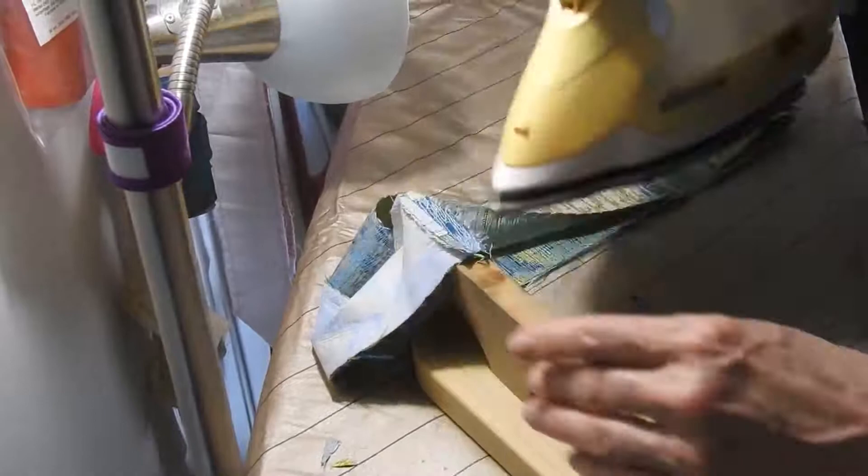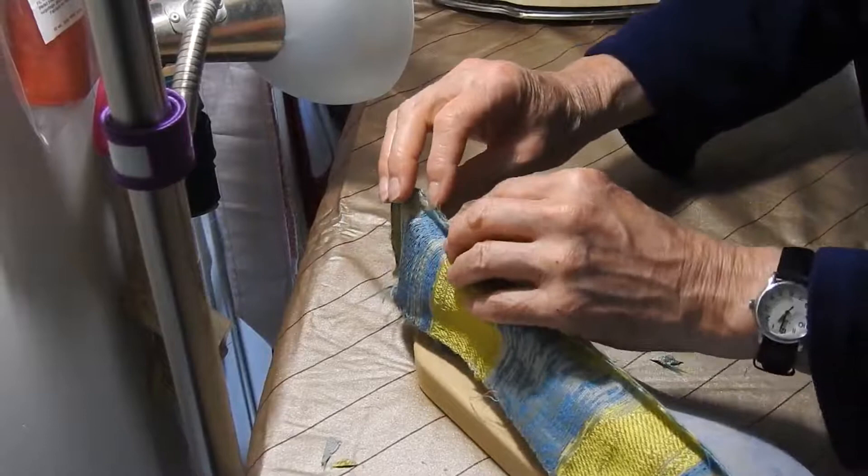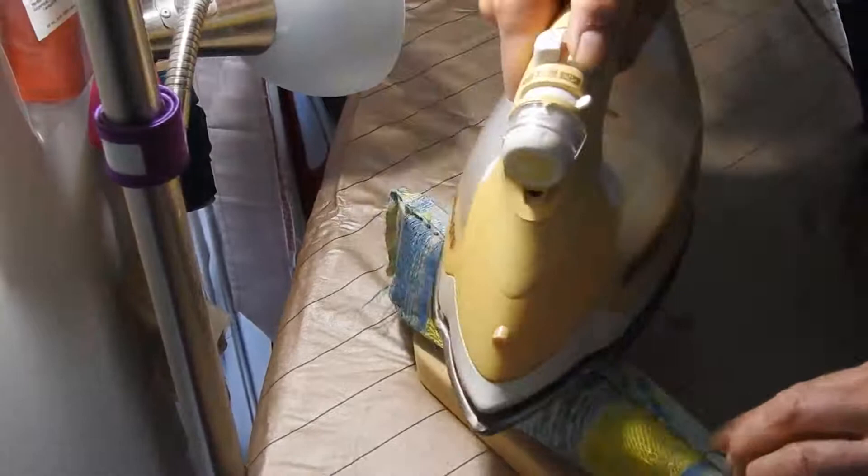Now comes the long seam across the top. We can lay as much of it as we can on the point presser. Again, use our fingers. The point is right in there and I'm going to start to iron. I'm going to work my way down the length of the point presser until I run out of wood. Take it off, turn it around, and put the other end on the point presser.